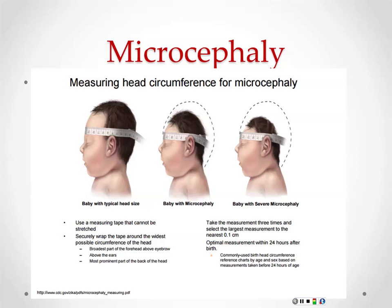This is what microcephaly looks like. There's a normal infant on the left, a microcephaly case in the middle, and a severe case. Microcephaly is defined as head circumference less than 3% — a really small head. Our pregnant patient here has not had severe microcephaly.